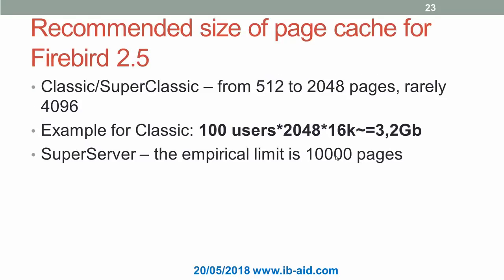What are the recommended page cache sizes for Firebird? There are differences between versions 2.5 and 3.0, and of course between architectures. Firebird 2.5 Classic and SuperClassic should have page cache set to between 500 and 2000 pages. In rare cases with mostly read load, page cache for Classic or SuperClassic could be up to 4000 pages.